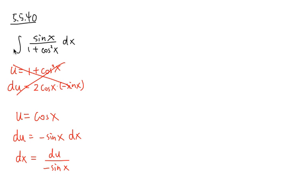And now let me take this integral into the u world. So I will have the integral of the sine x on the top over 1 plus, and we have cosine square x. And in the u world, cosine x is the u. So this part becomes u raised to the second power.